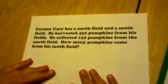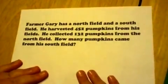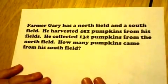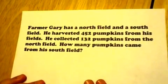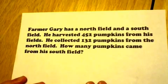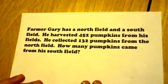But first, let's read the word problem. Farmer Gary has a north field and a south field. He harvested 452 pumpkins from his fields. He collected 132 pumpkins from the north field. How many pumpkins came from his south field?